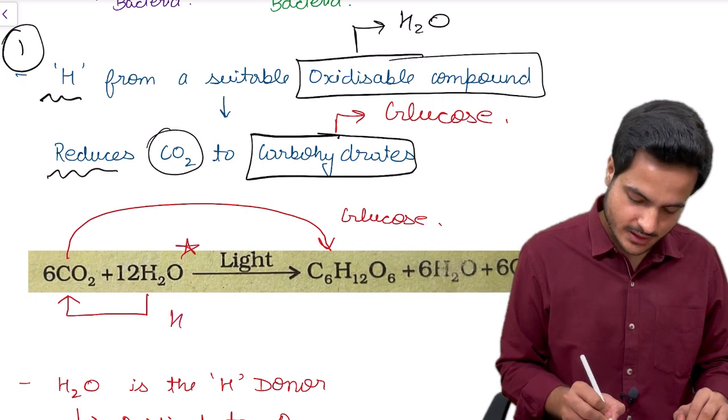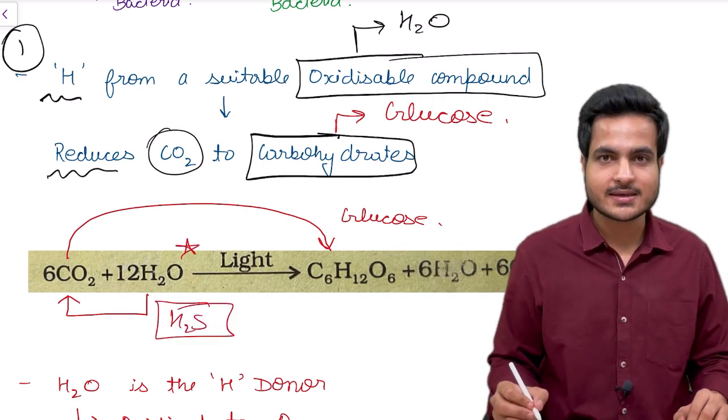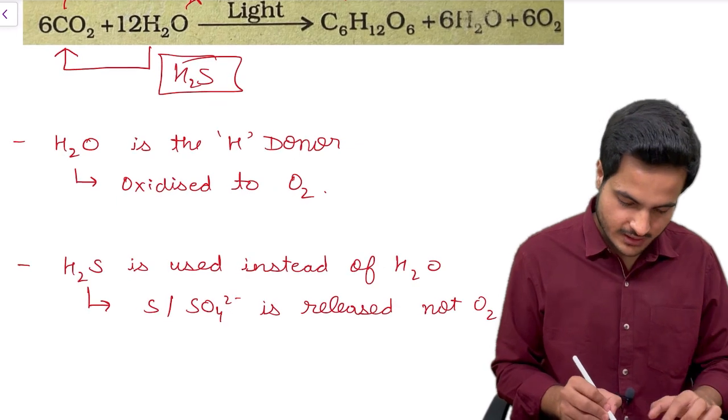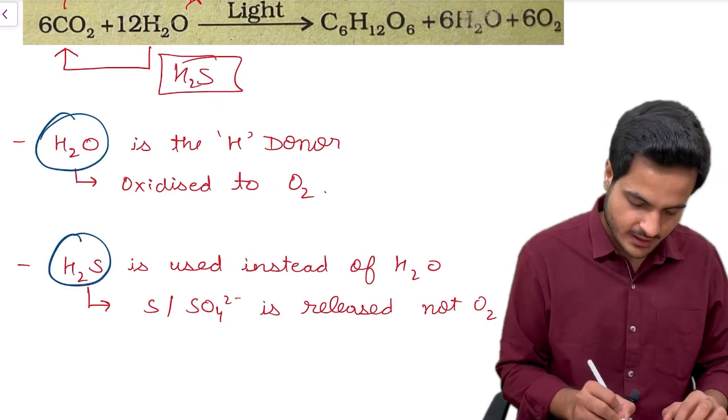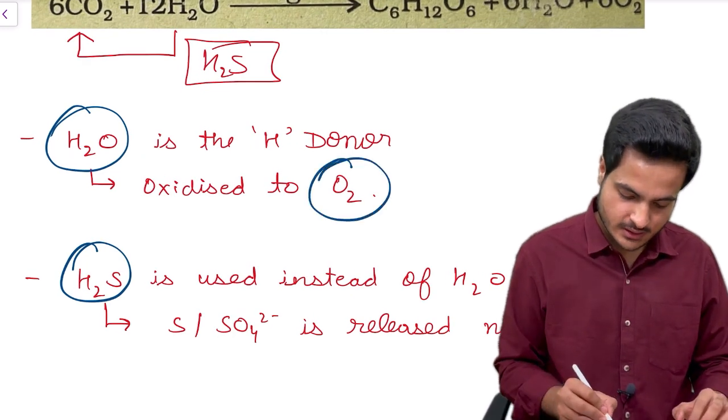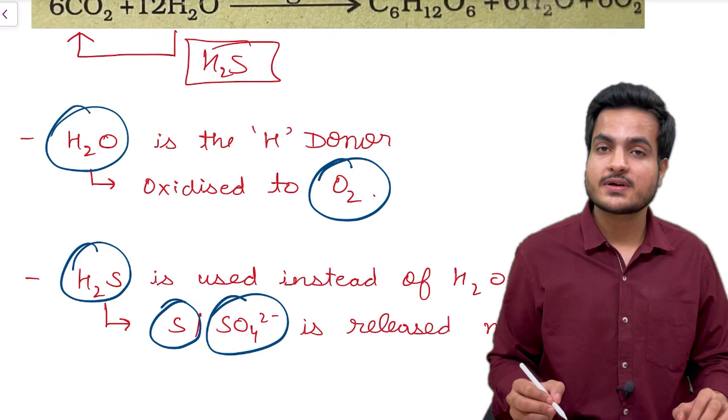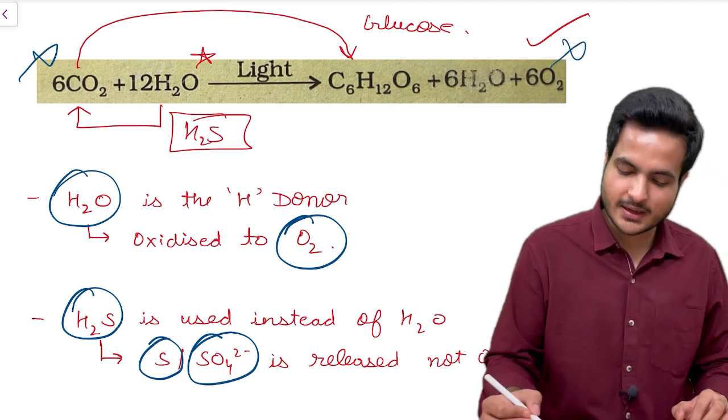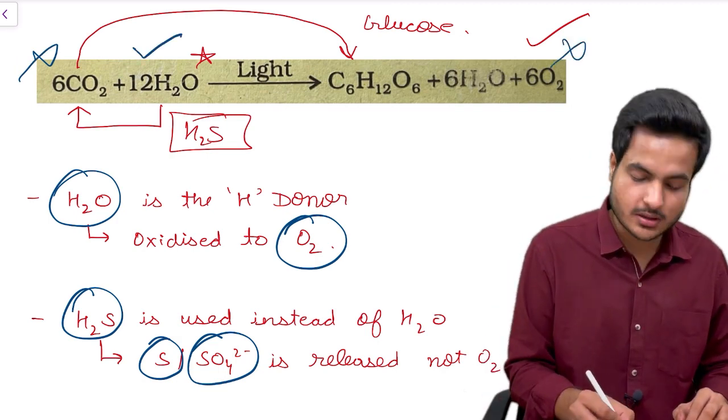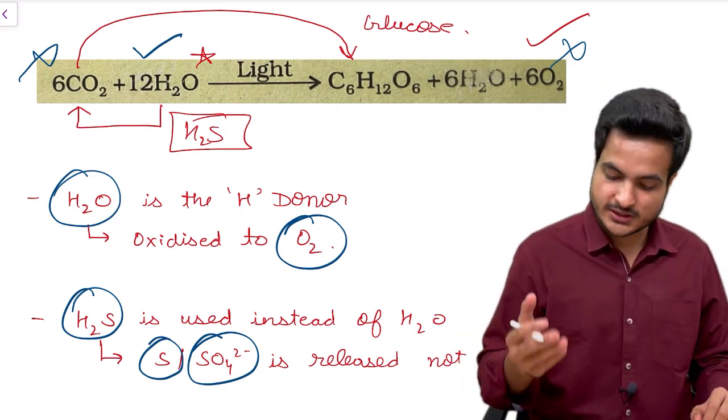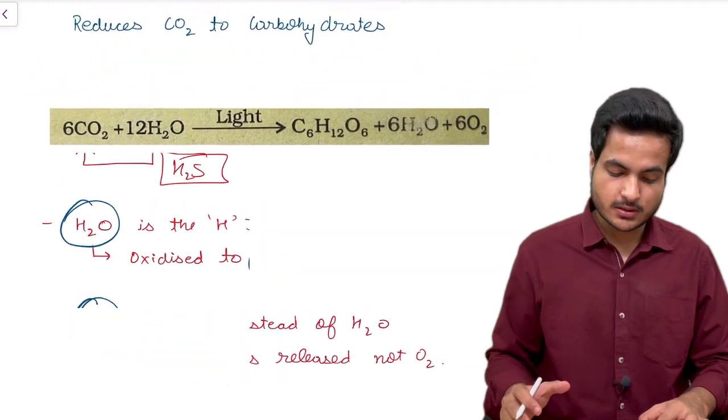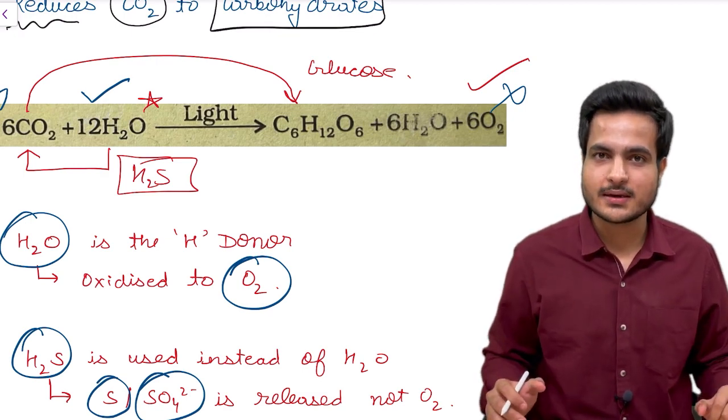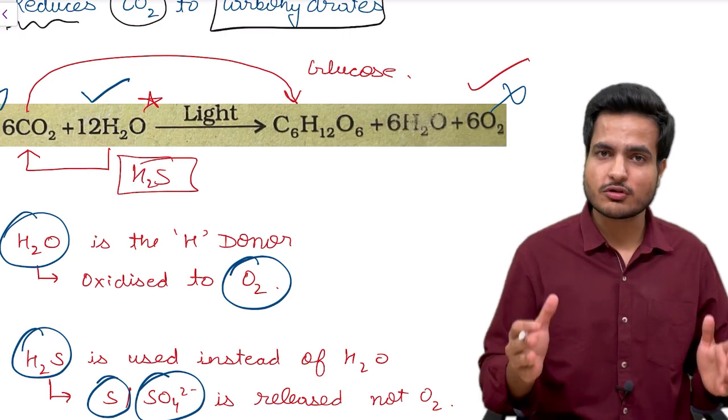And how did he prove it? Instead of water, he used H2S, that is hydrogen sulfide gas. And he saw that instead of oxygen being released, sulfur and sulfate was released. So when he replaced water with hydrogen sulfide, he could see that instead of oxygen, sulfur or sulfates were released. Therefore he could easily explain that this is not carbon dioxide which is converting into oxygen, it is actually the water or the oxidizable compound which is converting into oxygen. So with this we have discussed the five scientists starting with Joseph Priestley and now coming back to the last scientist Cornelius Van Niel. We came to know how they contributed to the research of photosynthesis.